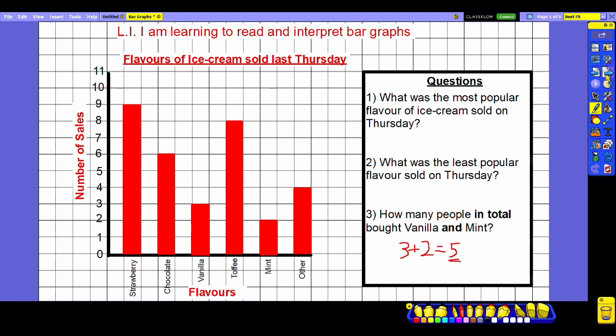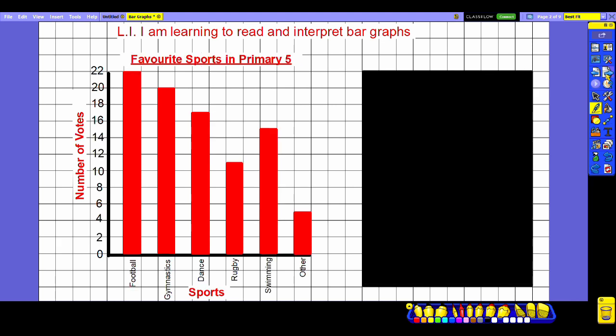Let's have a look at another graph with slightly different information in it. This graph here we can see from the title is a breakdown of the favorite sports in primary five. The categories at the bottom are the different sports and the number of votes that each one got is up the side. However if we look closely at the scale we'll see that this time it's not going up in single digits, it's going up in twos.